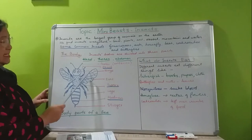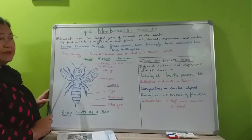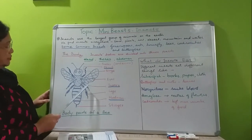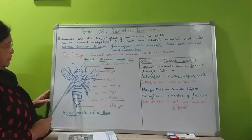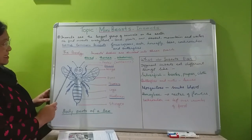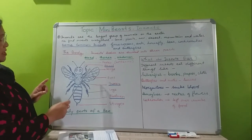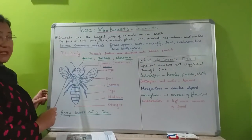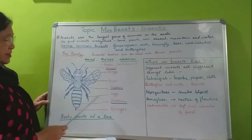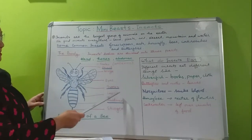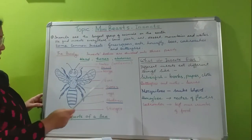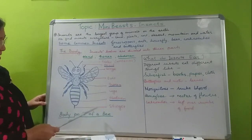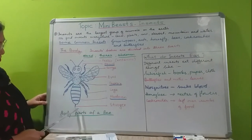In the middle part, what is connected? The wings and legs. Insects have six legs — one, two, three, four, five, six — and they have two wings. So the legs and wings are connected in this middle part of the body, which is called the thorax.